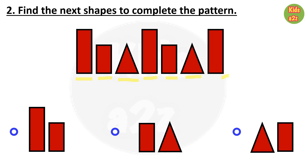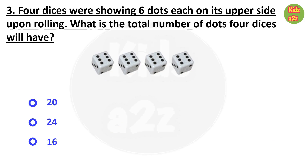Question 3: 4 dices were showing 6 dots each on their upper side. Upon rolling, what is the total number of dots 4 dices will have? Here we need to find 4 groups of 6, that means 4 multiplied by 6 equals 24. So the correct answer is 24.